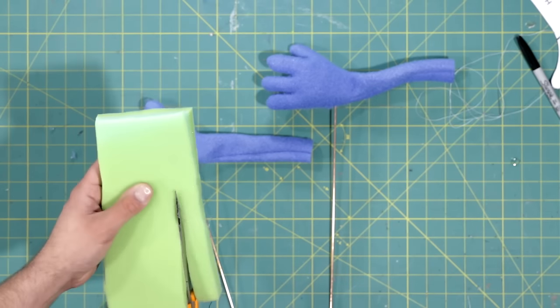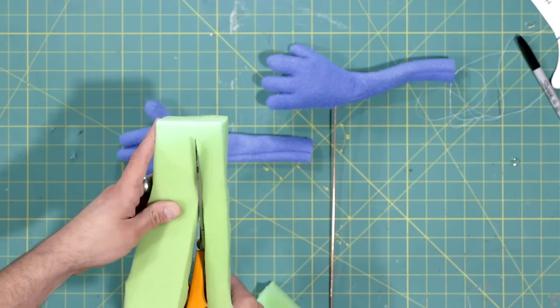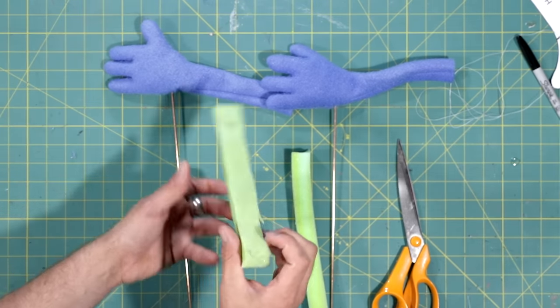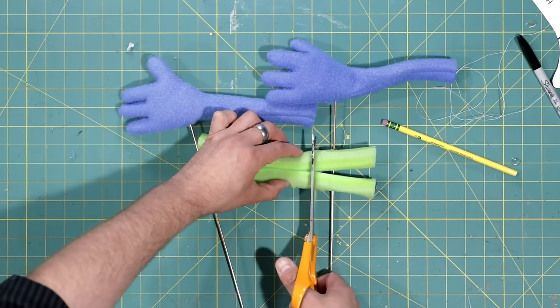To fill the arms, you can use fiber fill, batting, but in this case we're going to use foam. If you use foam as well, you're going to want to cut the corners to take the edge off, and trim them to size.